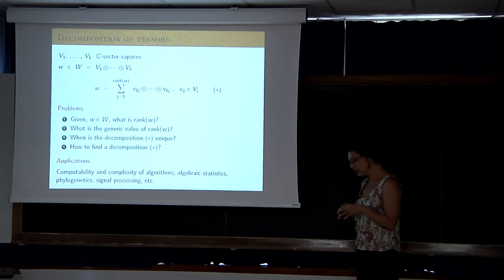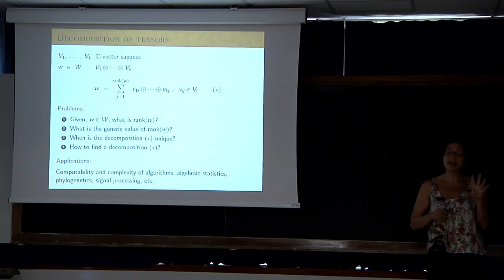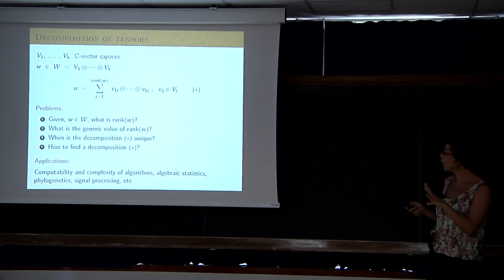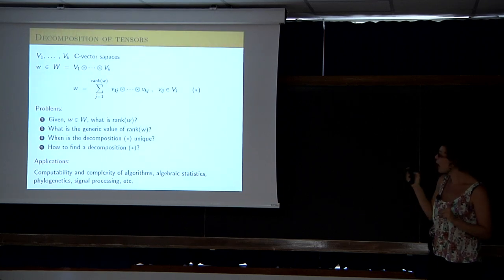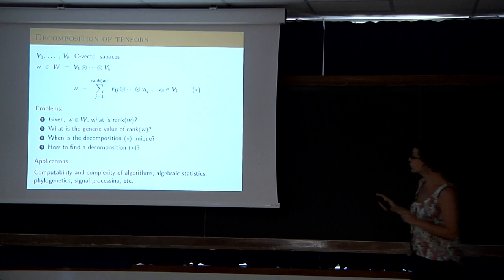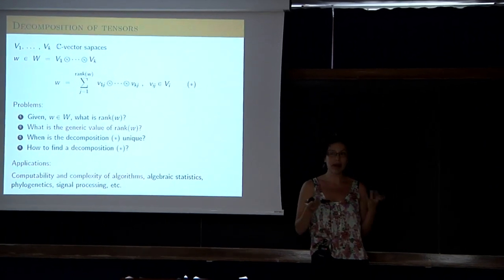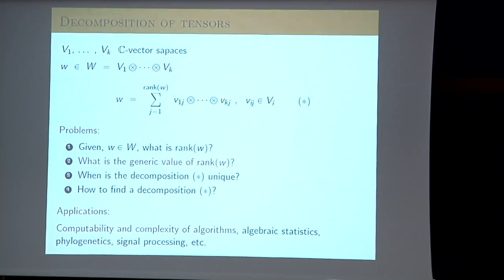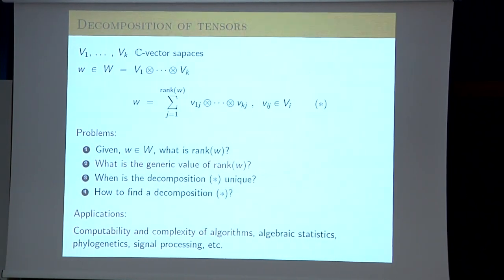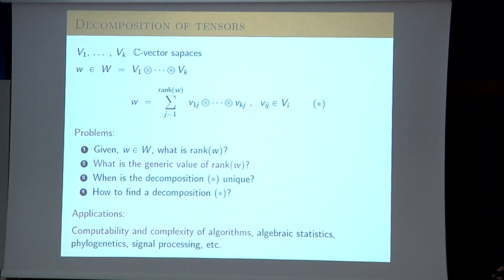I want to motivate the definitions of some very classical objects in algebraic geometry using the problem of tensor decomposition. I will concentrate on the question: what is the generic rank of a tensor? I will explain how this is important for computability and complexity of algorithms, and then we will introduce the projective varieties associated to this problem.